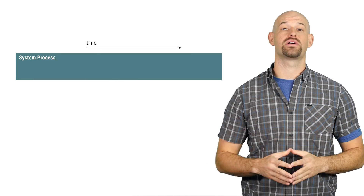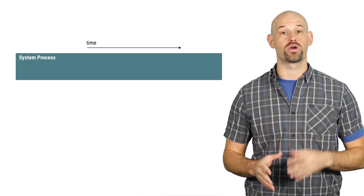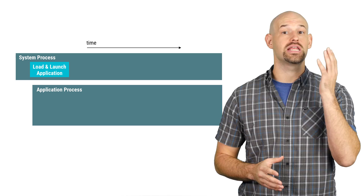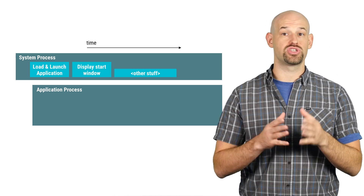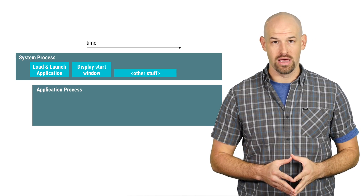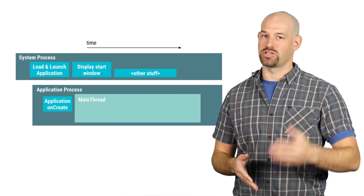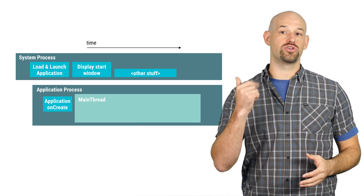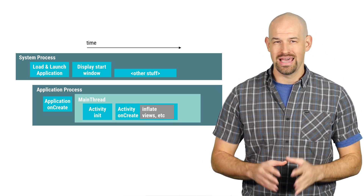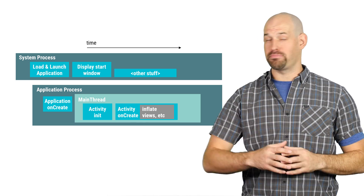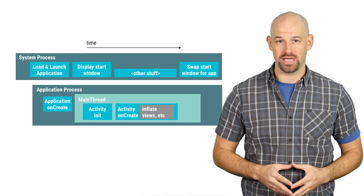So from the technical side, the whole process works something like this. When the user launches your app, the system does a bit of work to load your application information and create a unique process for your app. From there, the system process will display the starting window and basically hang out until the application is up and running. Meanwhile, the application process will create the application object and launch the main thread. This is where your startup activity will be initialized, created, inflated, and finally drawn. It's only at this point, after the application has drawn its first frame, that the system process then goes and swaps out the start window for the application.